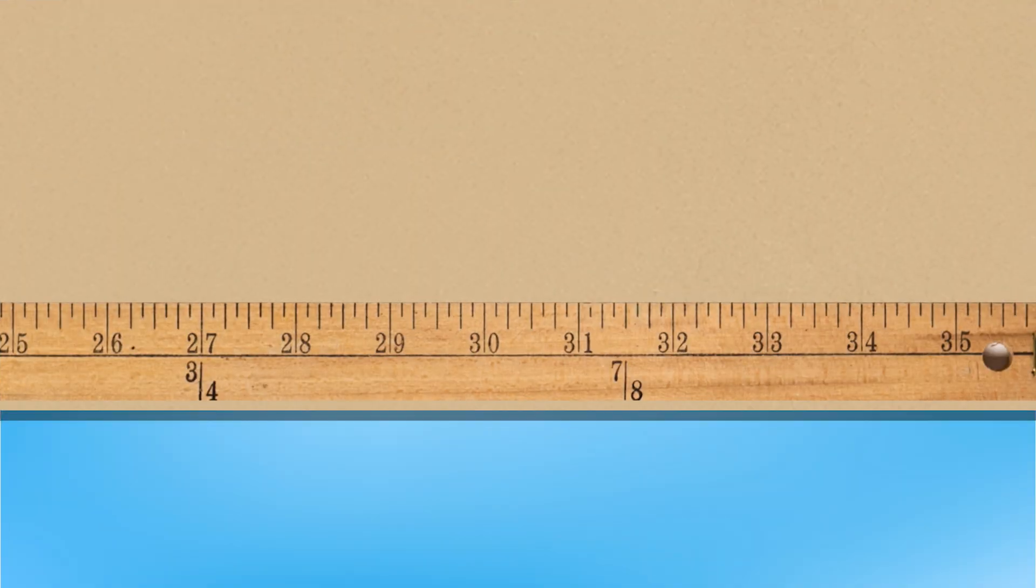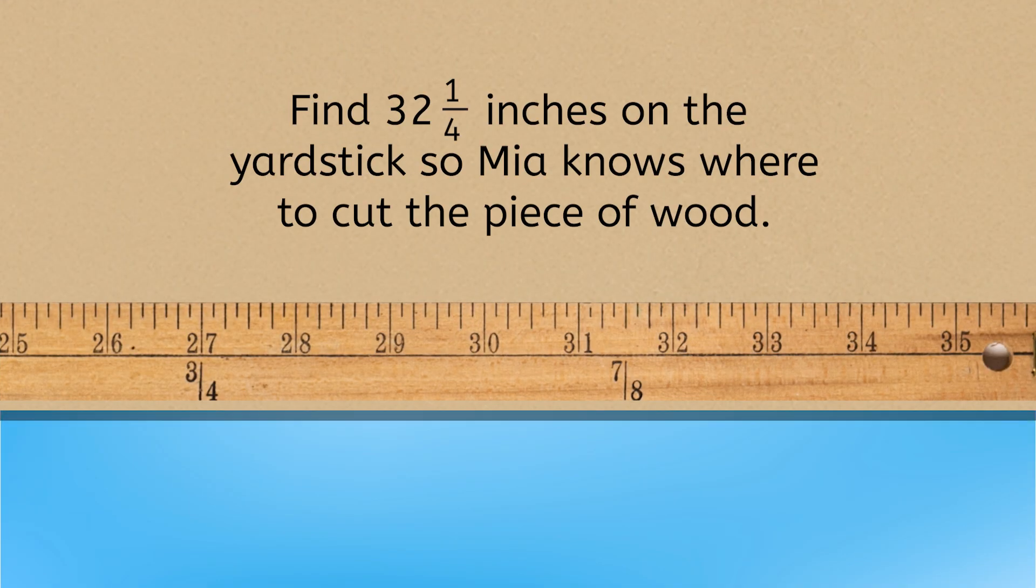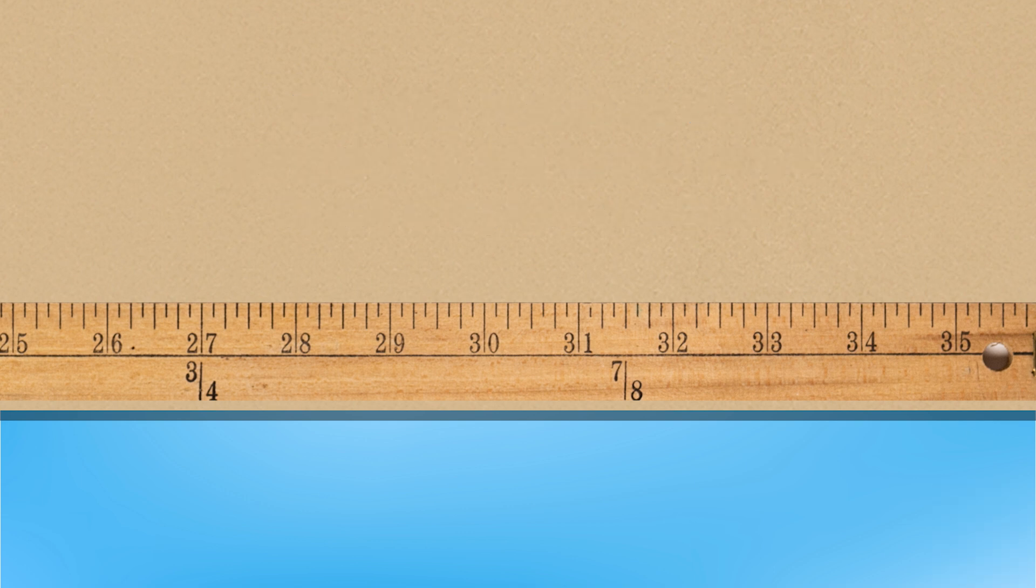The other side needs to be 32 and 1/4 inches long. Pause here to find that measurement on the yardstick so Mia knows where to cut. Finding the 32-inch mark first can help. These longer marks show fourths, so 32 and 1/4 is right here.